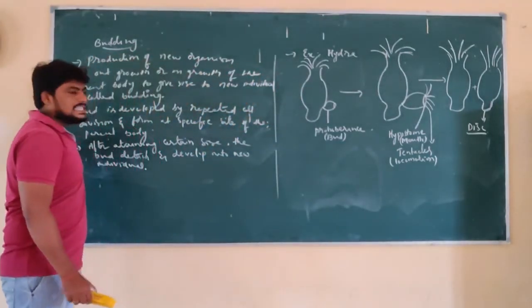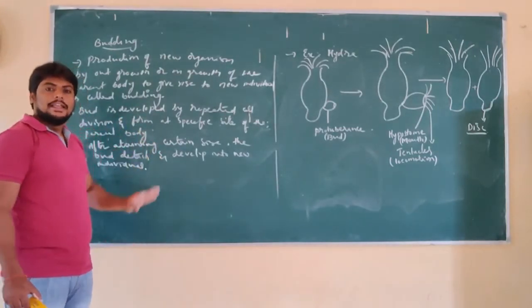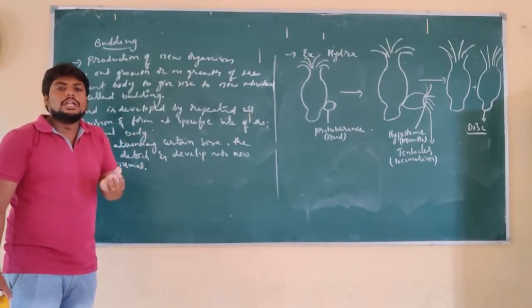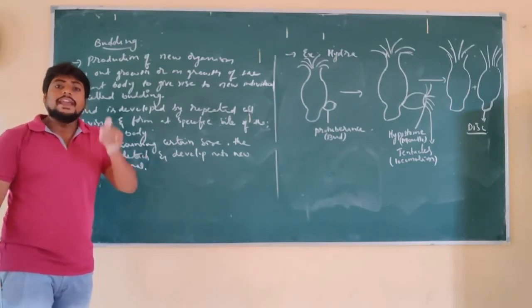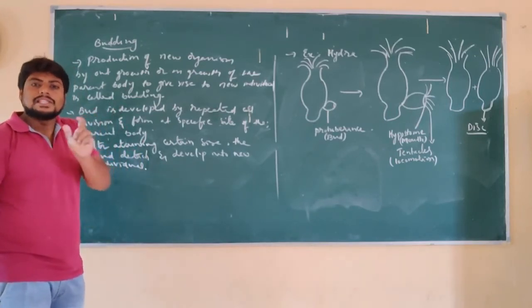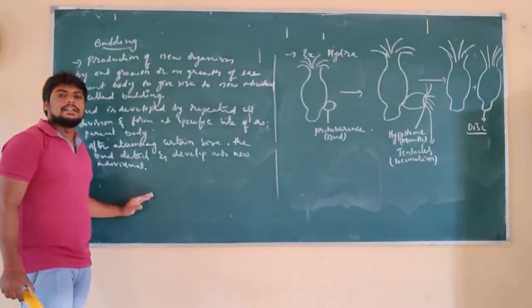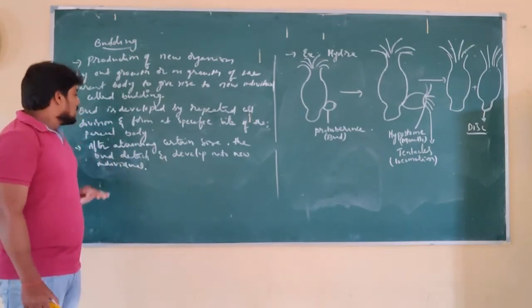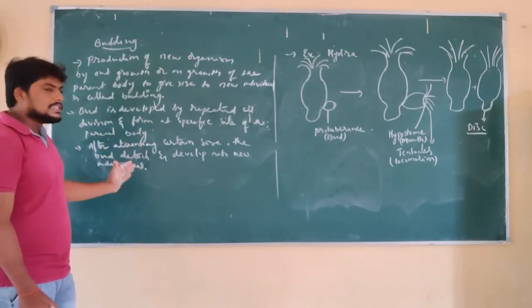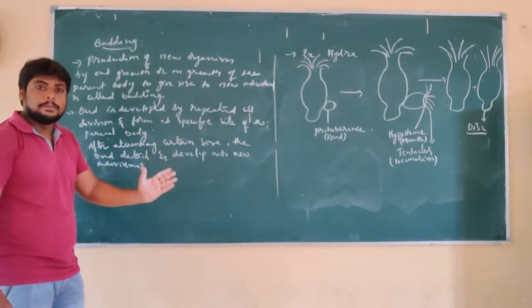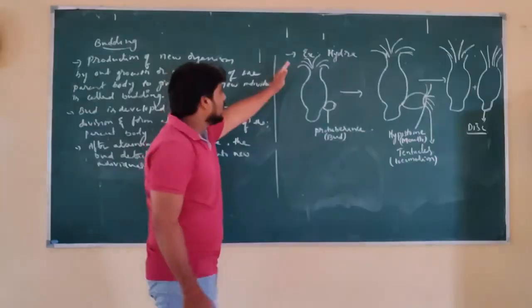How is it occurring? First, there develops a bulb-like structure either inside or outside of the body. That bud is developed into a new individual. How is it developed into a new individual? Due to repeated cell division. This bud is developed at a specific or particular site where the cells are matured. After reaching a certain size of the bud, it is separated or detached from the parent body and develops into a new individual.